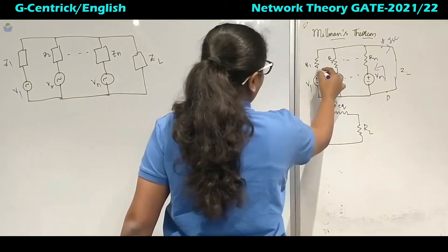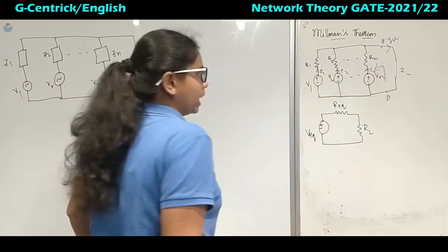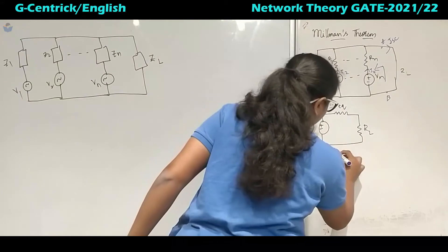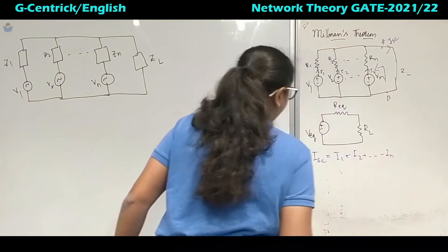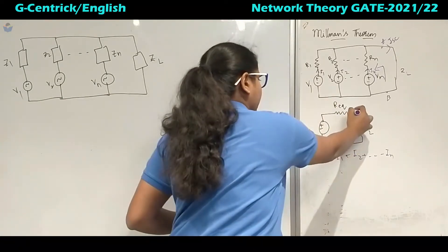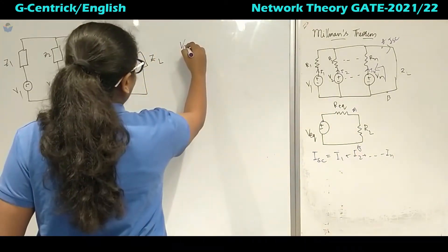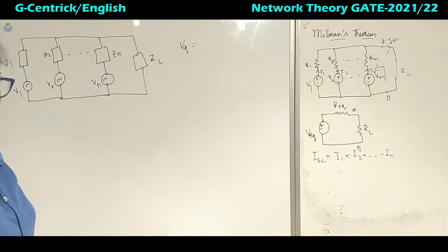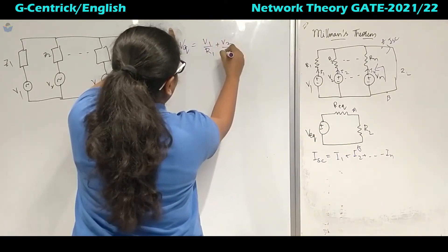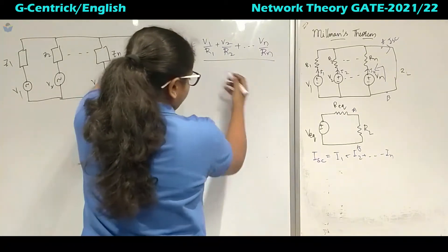You can write the equation for ISC. From each source we have I1, I2 up to IN currents. So ISC is the summation of each individual current: I1 plus I2 up to IN. This is similar to a Thevenin or Norton model with terminals A and B.